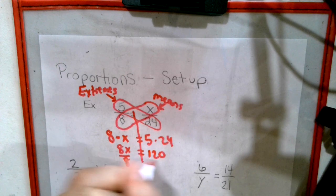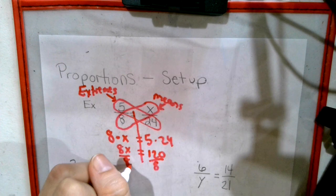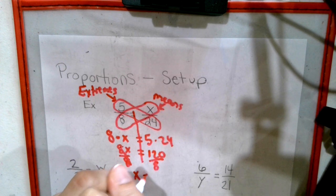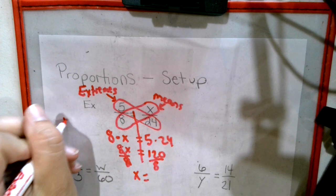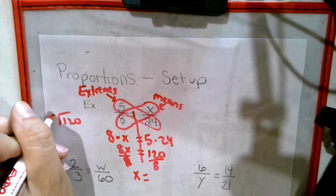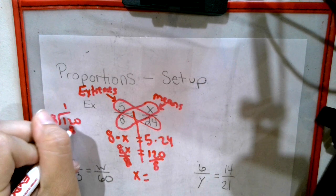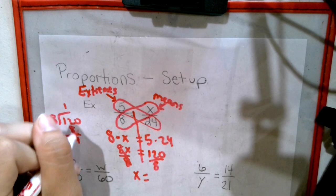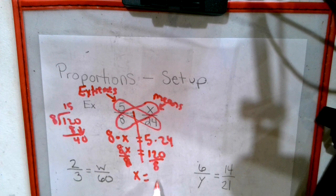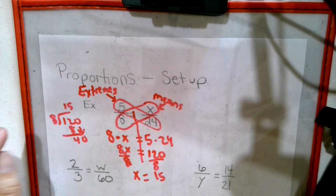And then we're going to divide by 8. We're going to have x equals, when we take our 120, we go to the side of our paper and divide by 8. And we get 15. That's an example of our proportion.